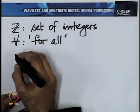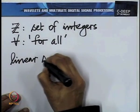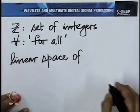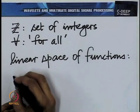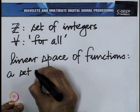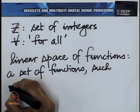If I multiply two different functions in that space by different constants and add up the results, it would still be in the same space. In general, we say any linear combination — a set of functions forms a linear space if it is closed under linear combinations.